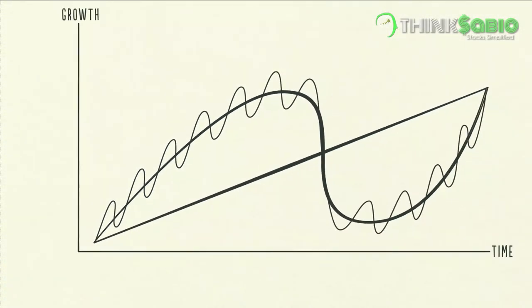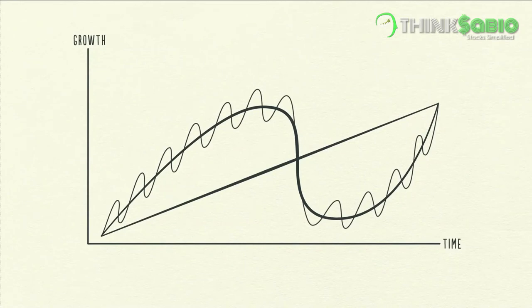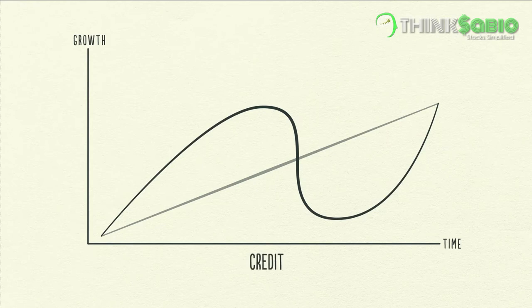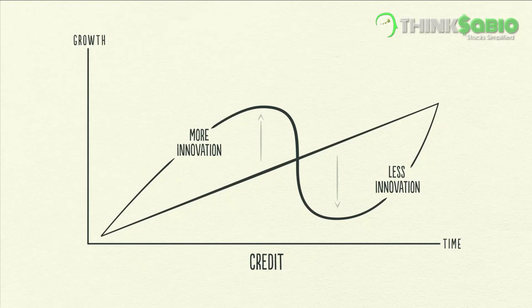While most people feel the swings, they typically don't see them as cycles because they see them too up close, day by day, week by week. We're going to step back and look at these three big forces and how they interact to make up our experiences. Swings around the line are not due to how much innovation or hard work there is — they're primarily due to how much credit there is.